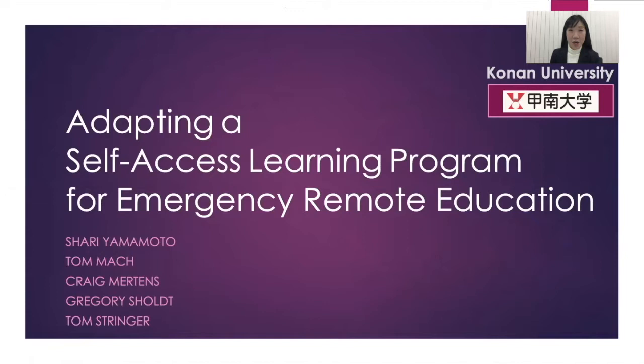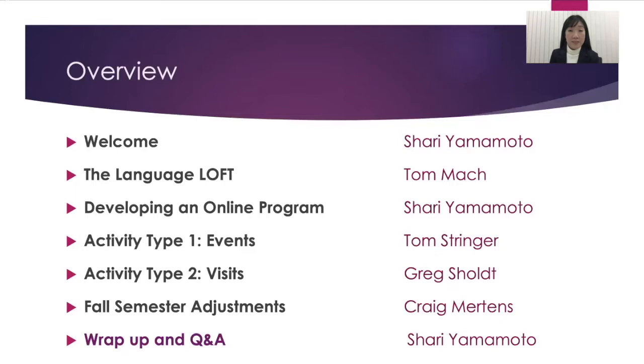Our aim today is to share our experiences of adapting a self-access learning program to provide emergency remote learning during the initial wave of COVID-19. Our program today is divided into five main sections and we'll each be taking turns to cover various aspects of our action research from planning to implementation to adjustments based on data and feedback.